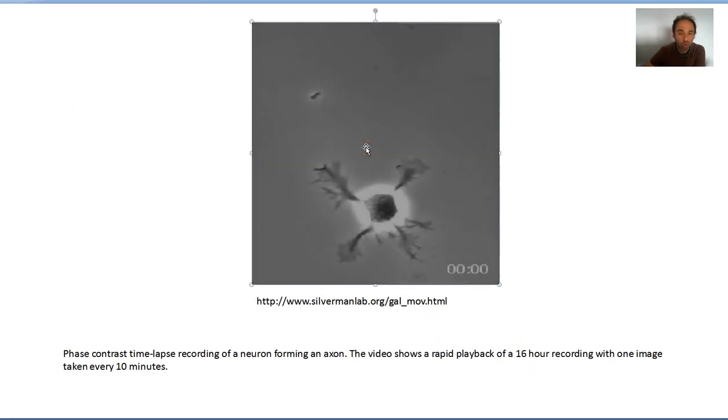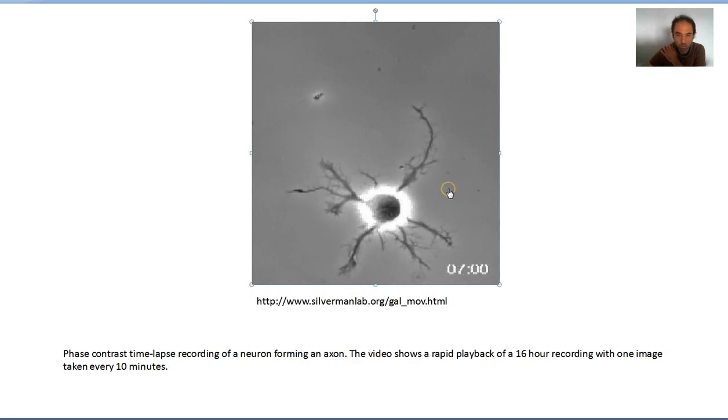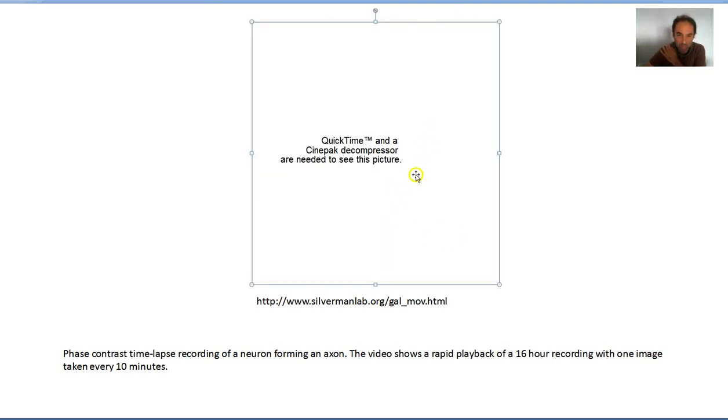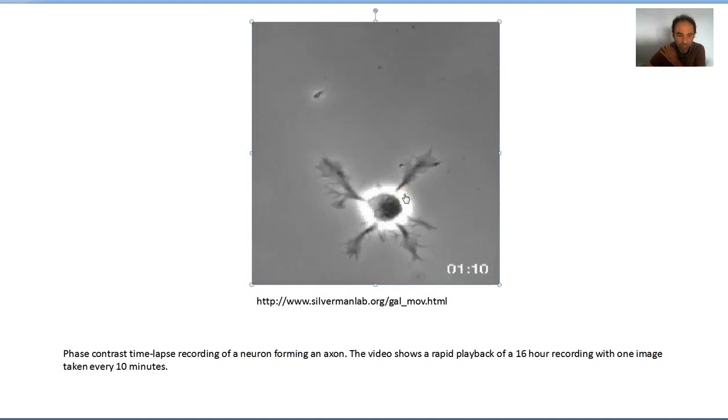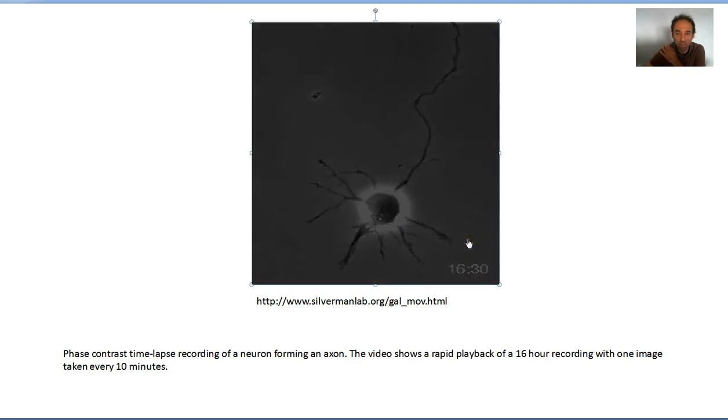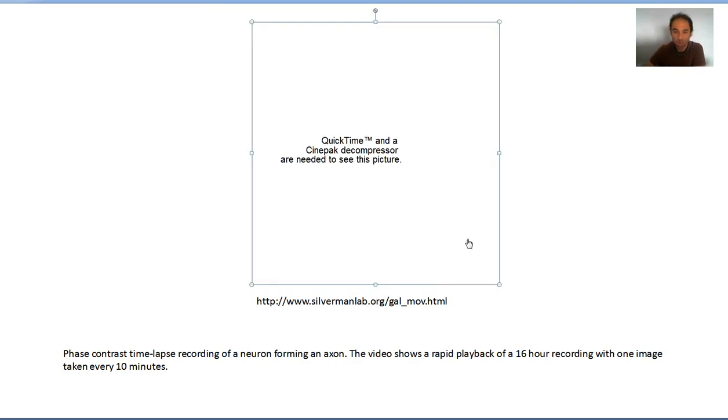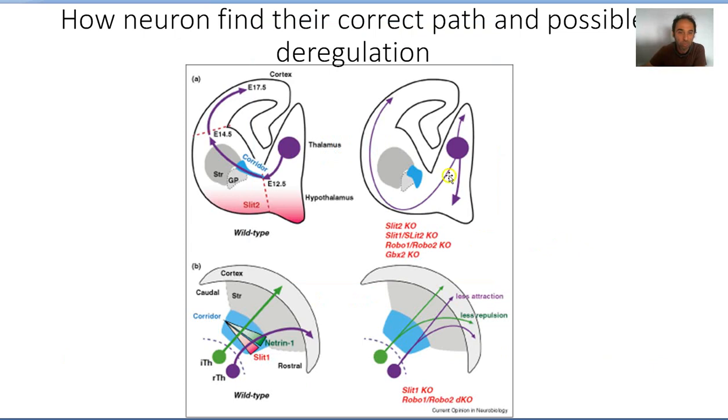I wanted to show you this movie recorded more than 15 years ago, where you see the motion of the axons. You have neurons where the axons are formed, and the dendrites here are much less stable, that are sensing the space around them.